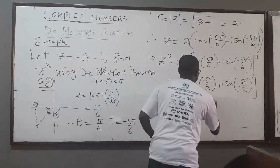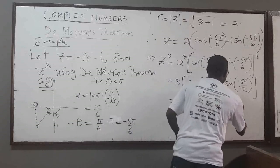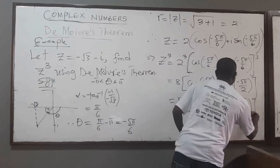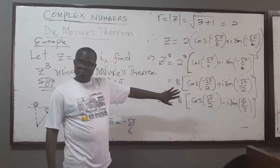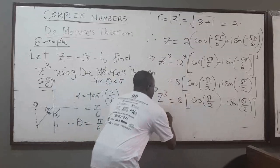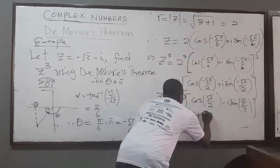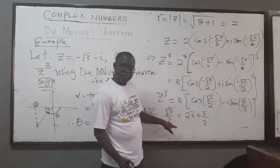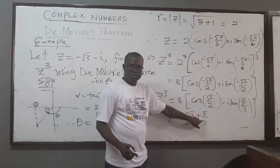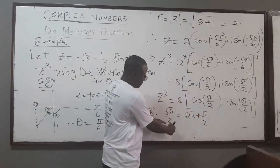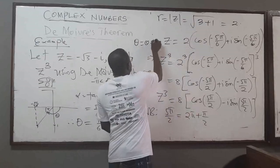We can rewrite this. Note that negative 5π/2 is the same as negative 2π plus negative π/2 — or equivalently, adding 2π means we can replace the argument by negative π/2, since cosine and sine have period 2π. So cosine(-5π/2) equals cosine(-π/2) and sine(-5π/2) equals sine(-π/2).